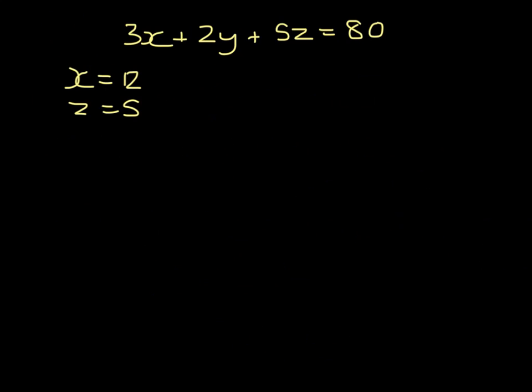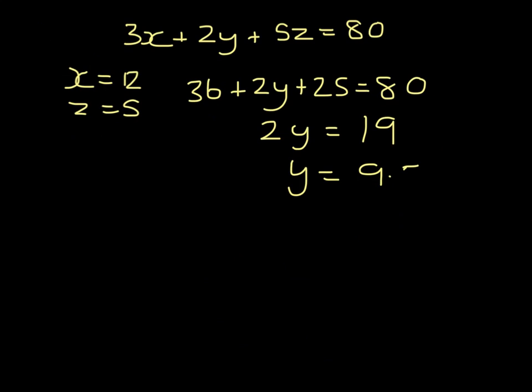Now we need to substitute these into the first equation. So 36 plus 2y plus 25 has to equal 80. That means that 2y would be 80 minus 36 minus 25, and y is 9 and a half.